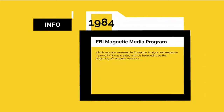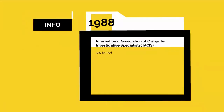In 1984, the FBI Magnetic Media Programme, which was later renamed to Computer Analysis and Response Team, was created and is believed to be the beginning of computer forensics. In 1988, the International Association of Computer Investigative Specialists — an international nonprofit corporation composed of volunteer computer forensic professionals dedicated to training and certifying practitioners in the field of forensic computer science — was formed.